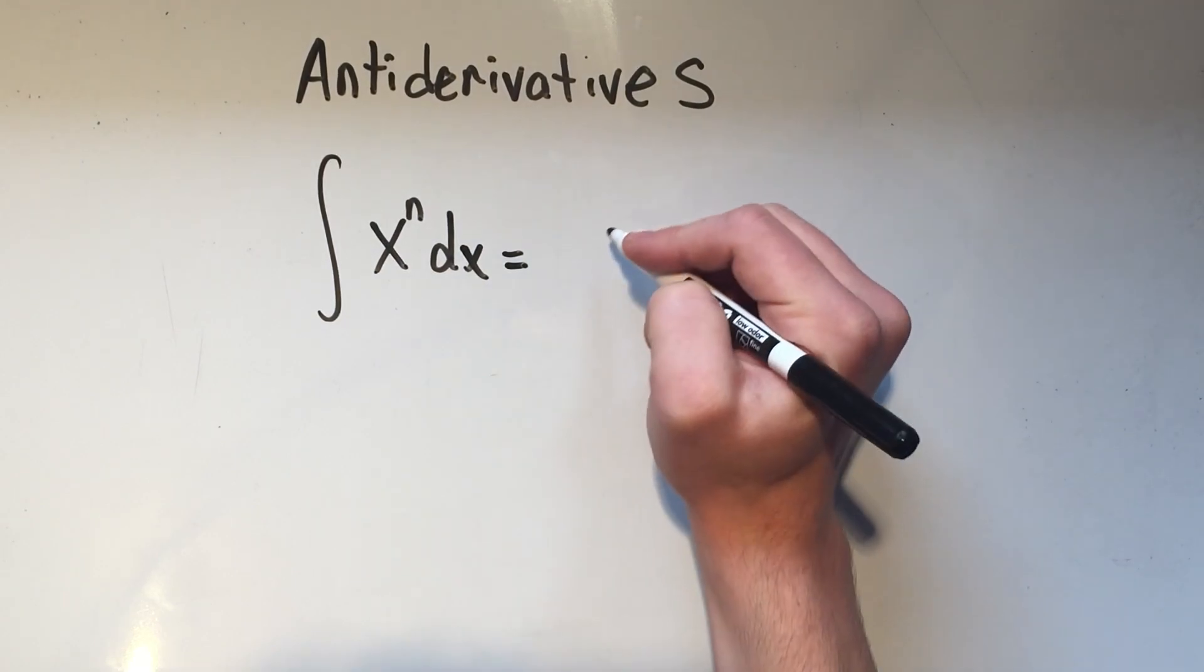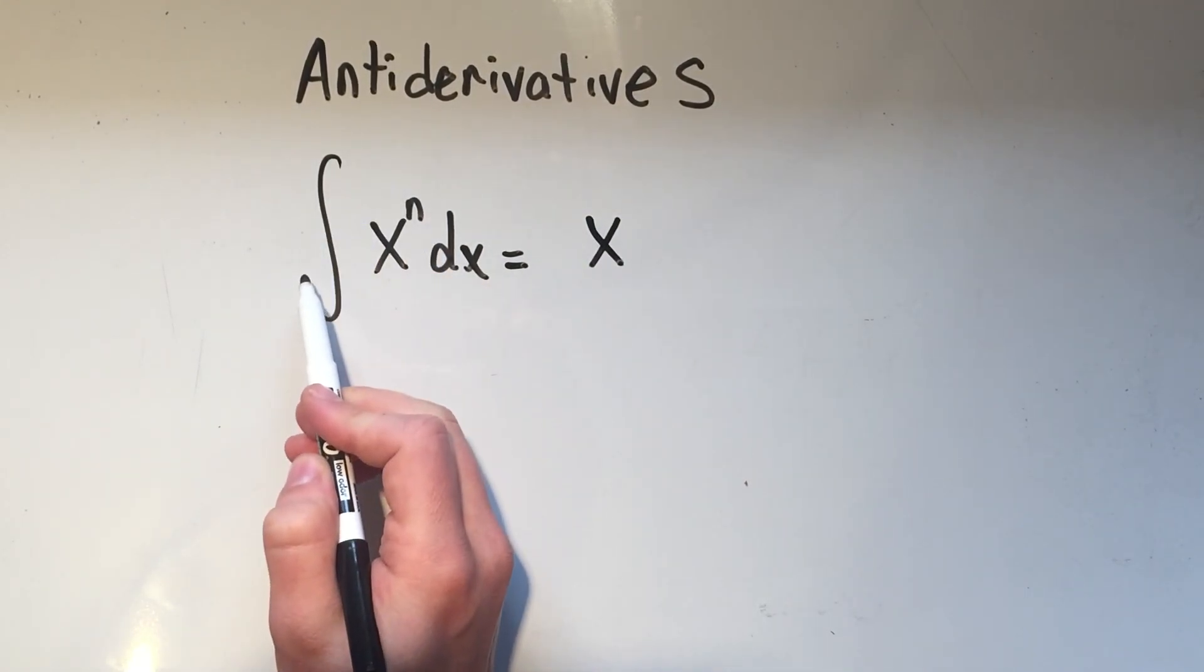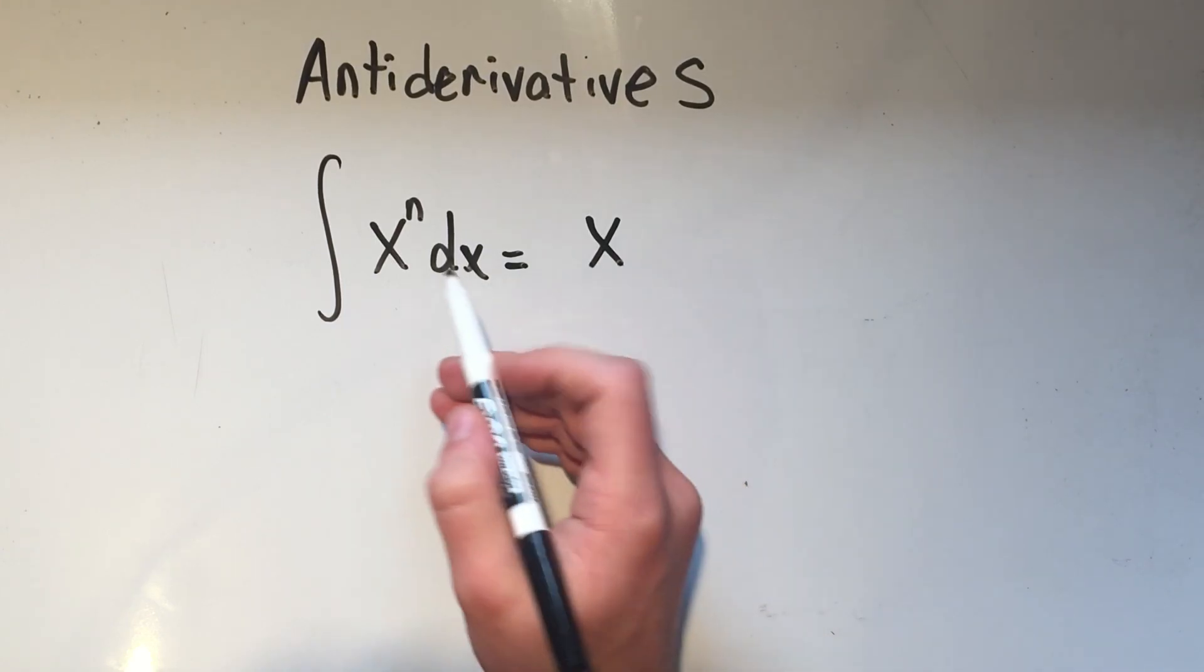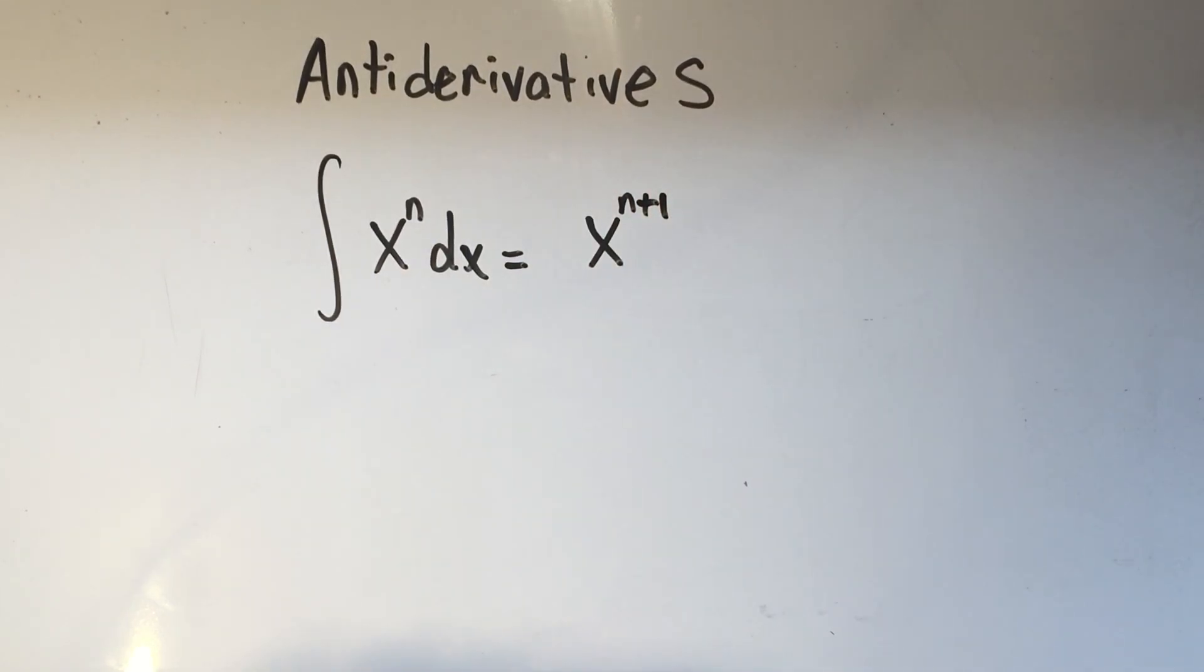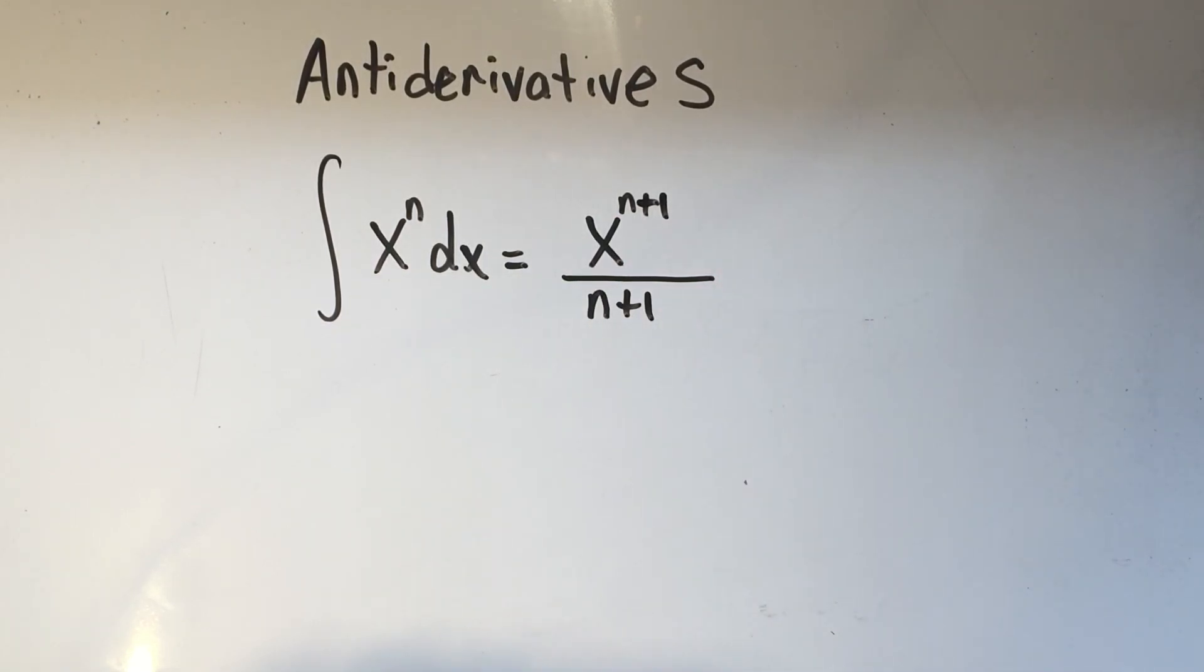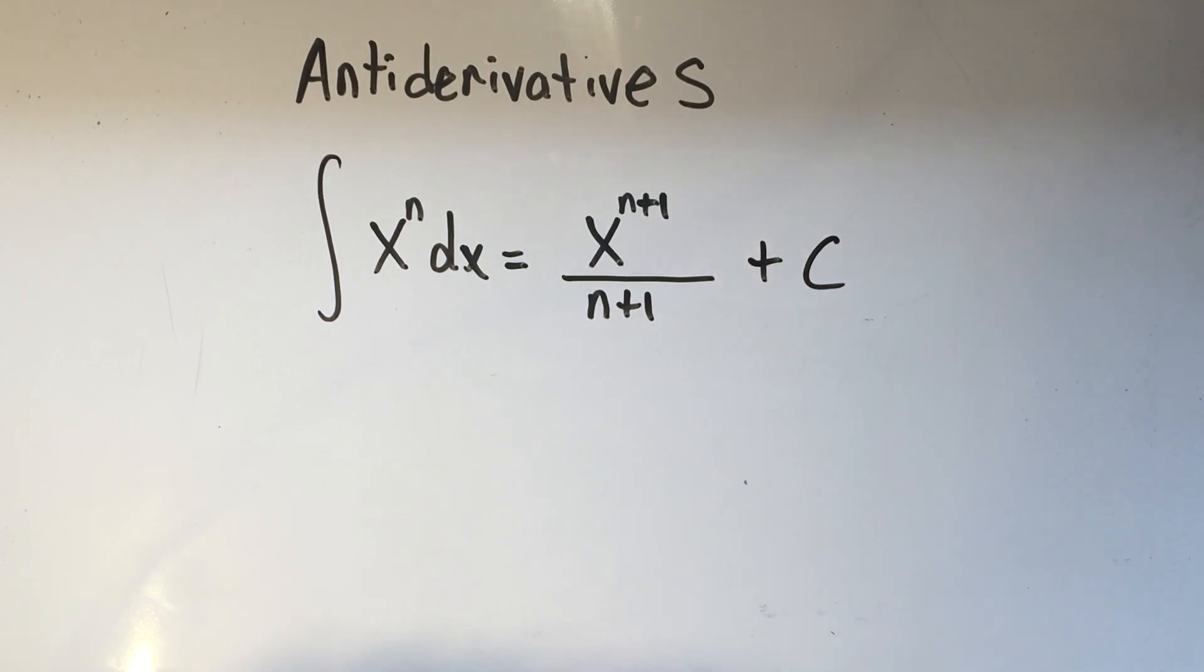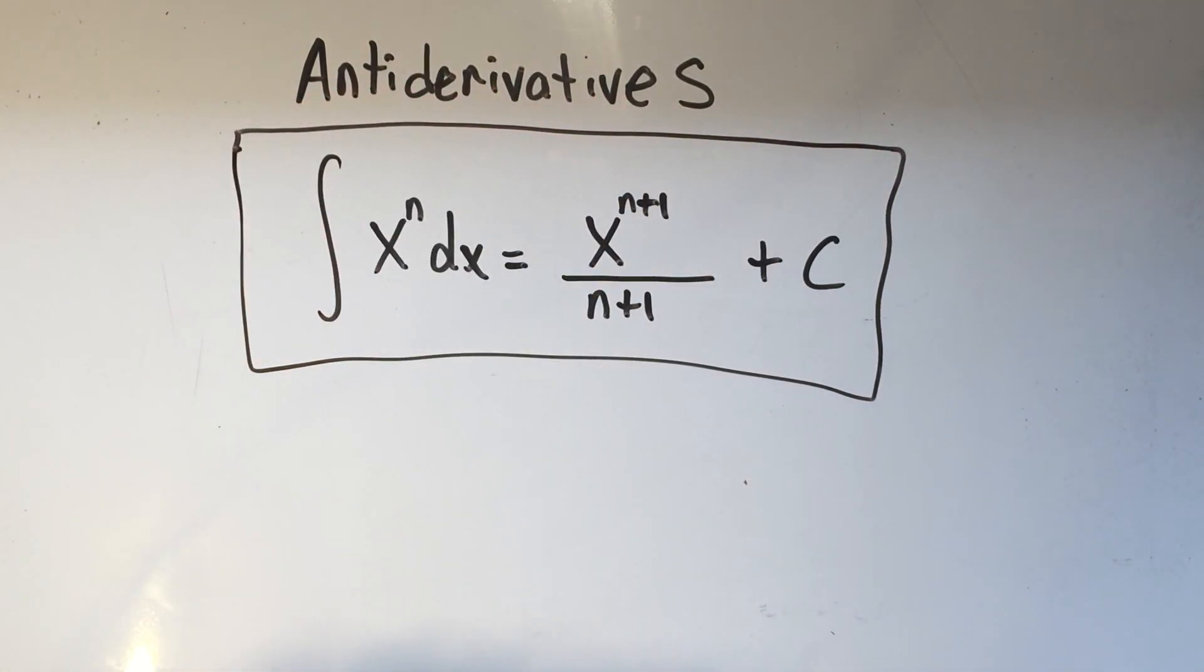You remember the power rule, don't you? The power rule says multiply by n and subtract one. If we're doing the opposite of that, we're just going to do that in the opposite order. So instead of subtracting one from the power, I'm going to add one to the power. And instead of multiplying by that power, I'm going to divide by that power. And since it's an anti-derivative, I need to add plus c.